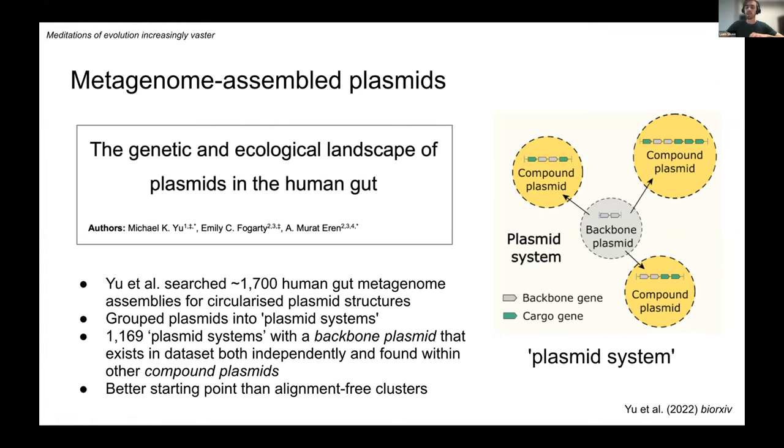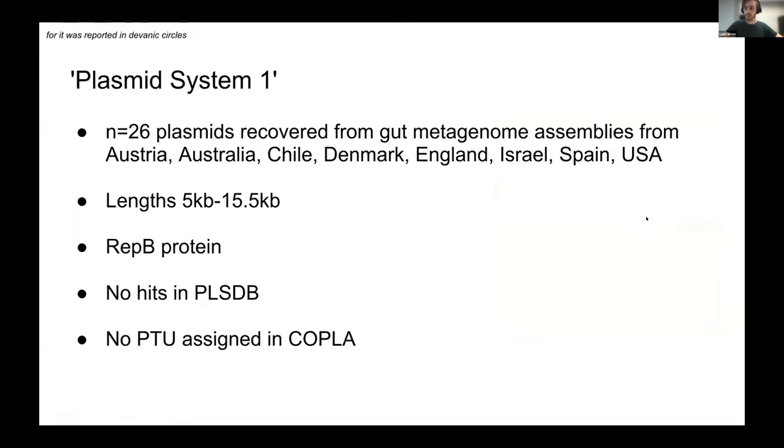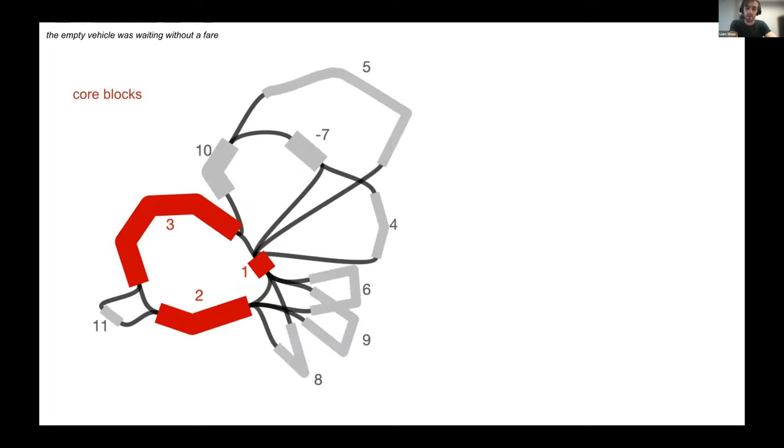And this is a better starting point for the purposes of pan graph than alignment free clusters. When you align the plasmids and make the graph, you'll get disconnected components, which is just a current limitation of the tool. So here's plasmid system one, which is the first of these over 1000 different plasmid systems that they report in this preprint. It's 26 plasmids, recovered from gut-based genomes. They're between five and 15 kilobases long. They have a repB gene there. There's no hits in plasmid B. There's no PTU assigned by coppler because this is a metagenome plasmid.